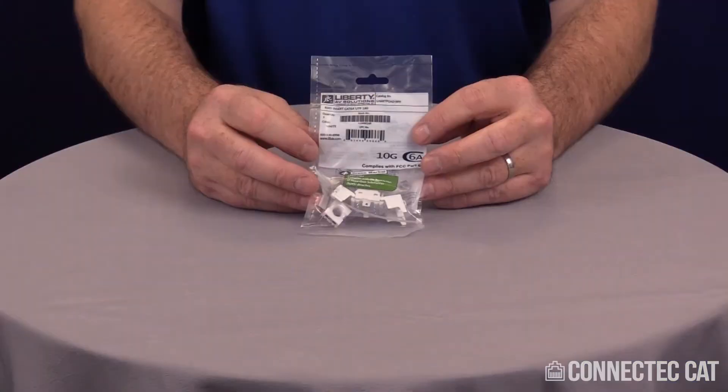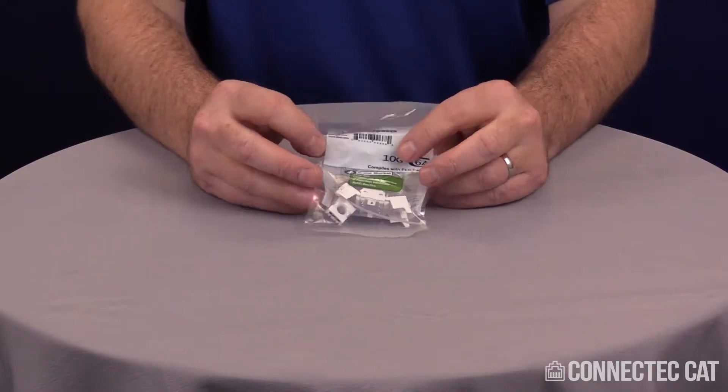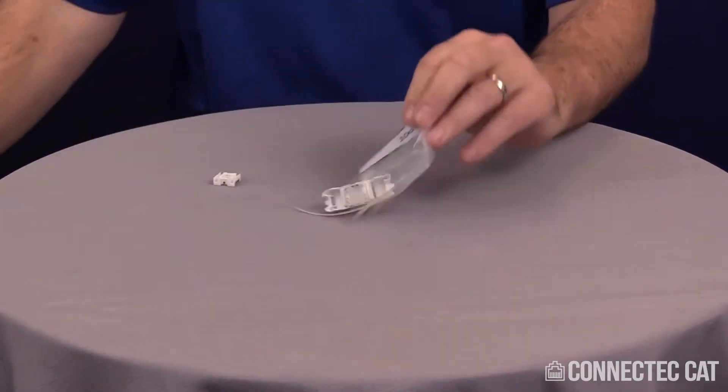Welcome to this product demonstration termination video of a Category 6A unshielded jack. When you first open your connector, it will be individually packaged with a complete bill of materials. You can pull one side off; it will be perforated.